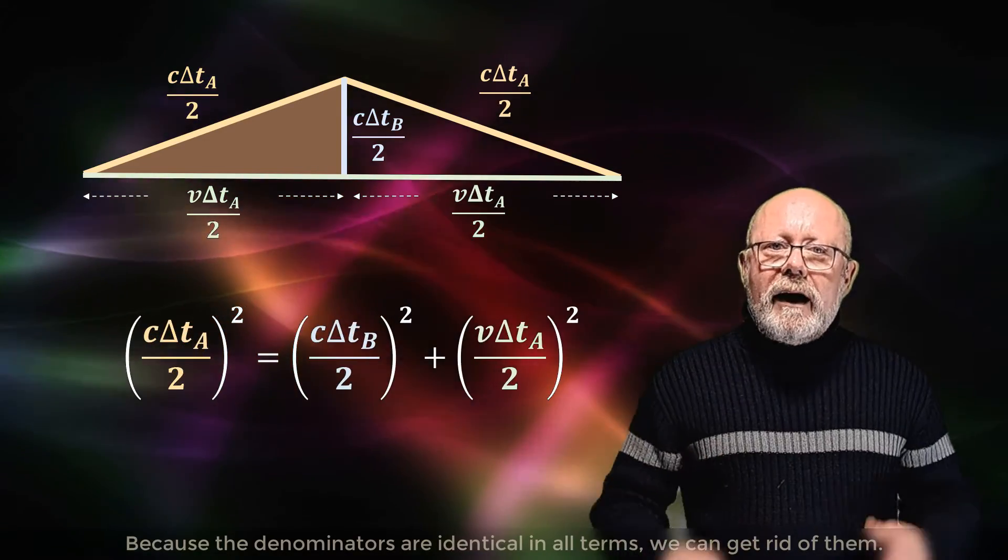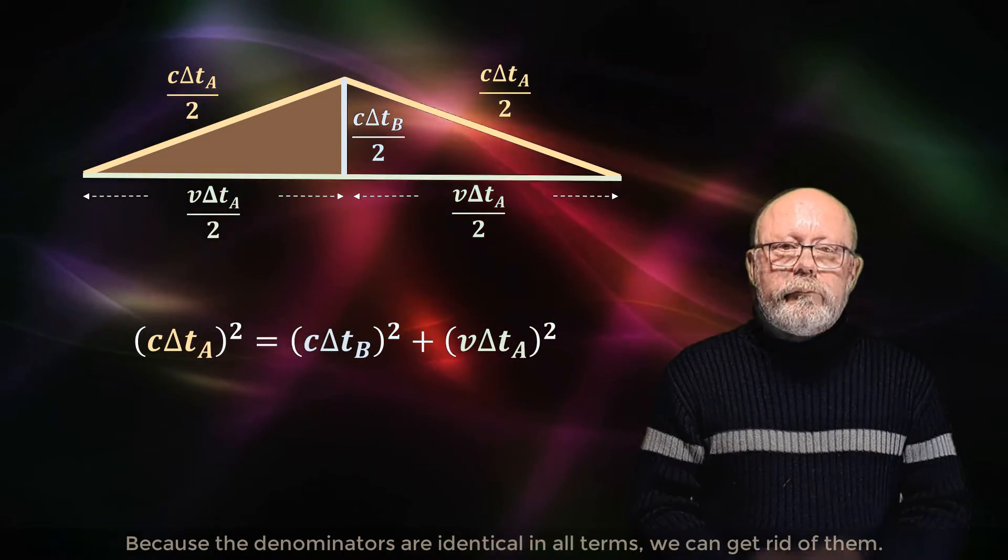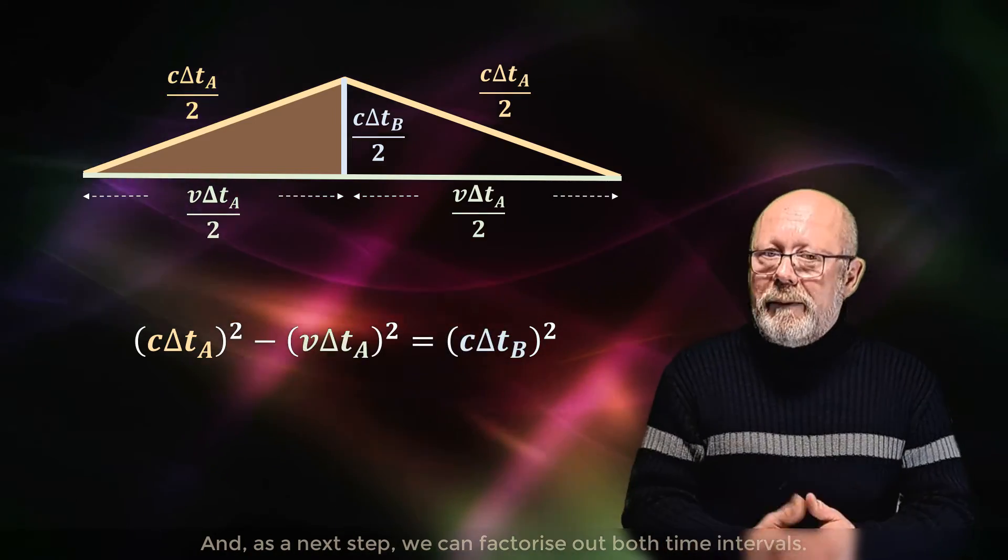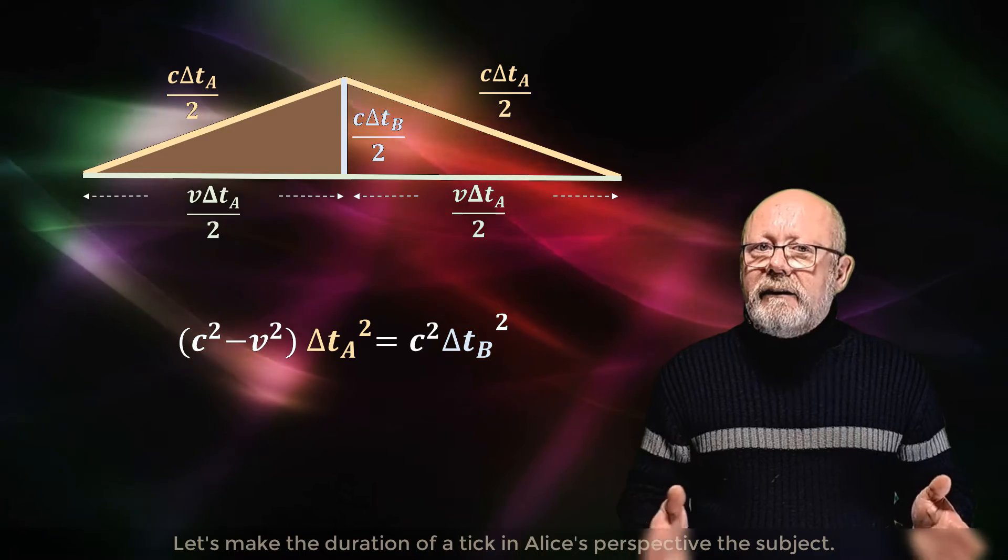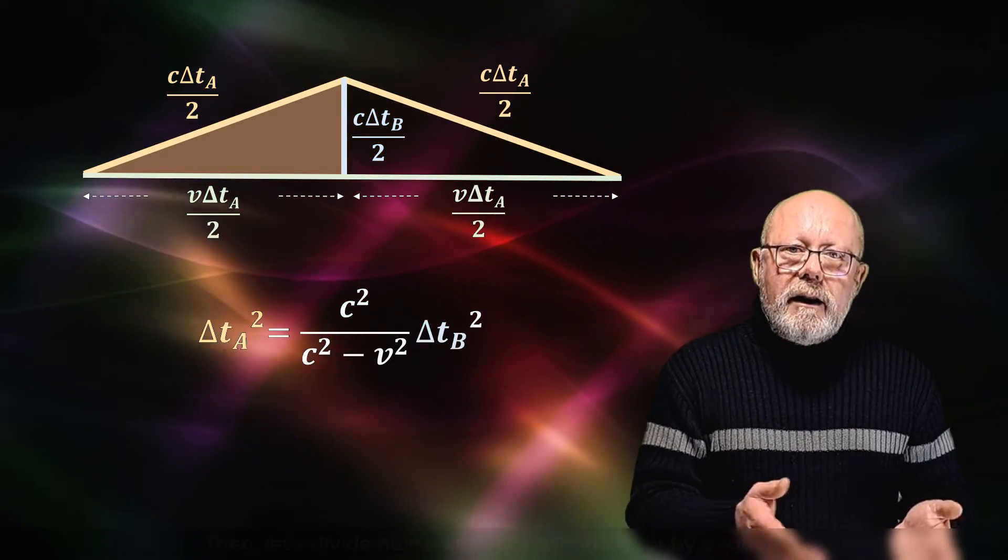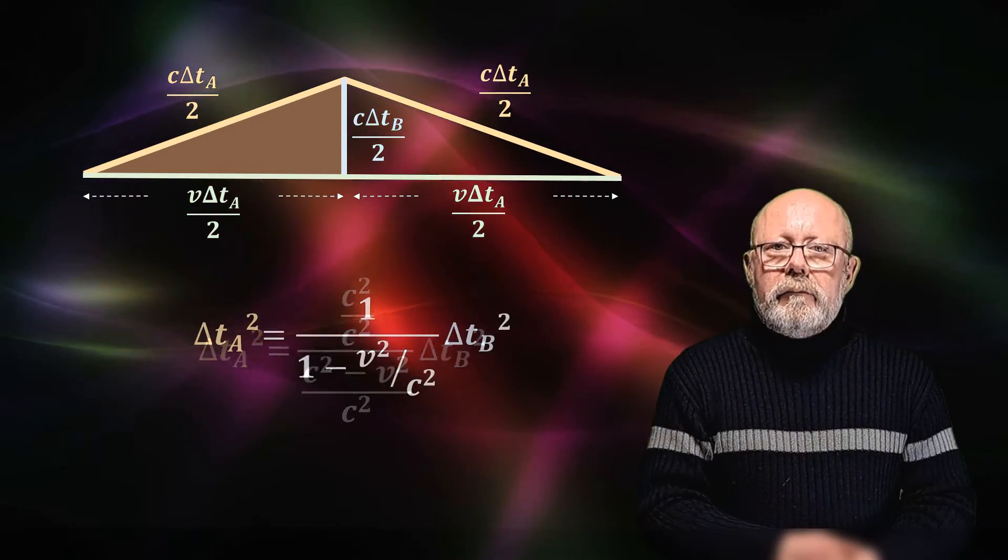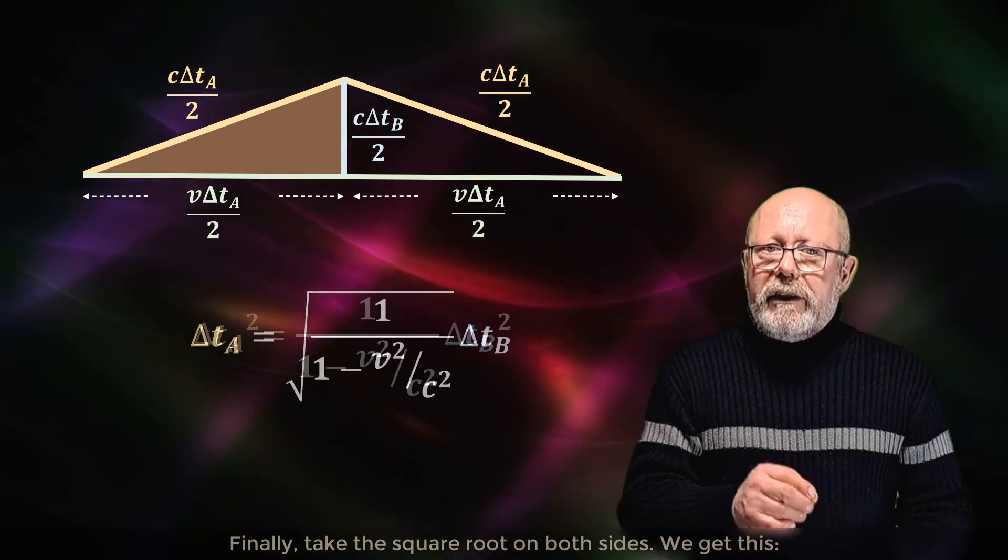Now let's replace d and h in the Pythagorean equation by the expressions we found for d and h. Because the denominators are identical in all terms, we can get rid of them. And as a next step, we can factorise out both time intervals. Let's make the duration of a tick in Alice's perspective the subject. Then let's divide numerator and denominator by c squared. And finally, take the square root on both sides.